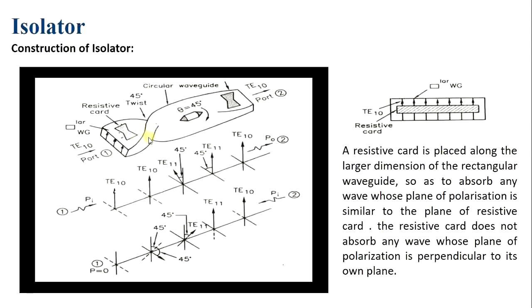The electric field vector then enters the mechanical twist and is rotated 45 degrees in the anti-clockwise direction. It then enters the ferrite rod, where due to Faraday rotation it is rotated again by 45 degrees in the clockwise direction, making the electric field vector vertical again. This signal then passes through the resistive card near port 2, where the electric field is again perpendicular to the card.